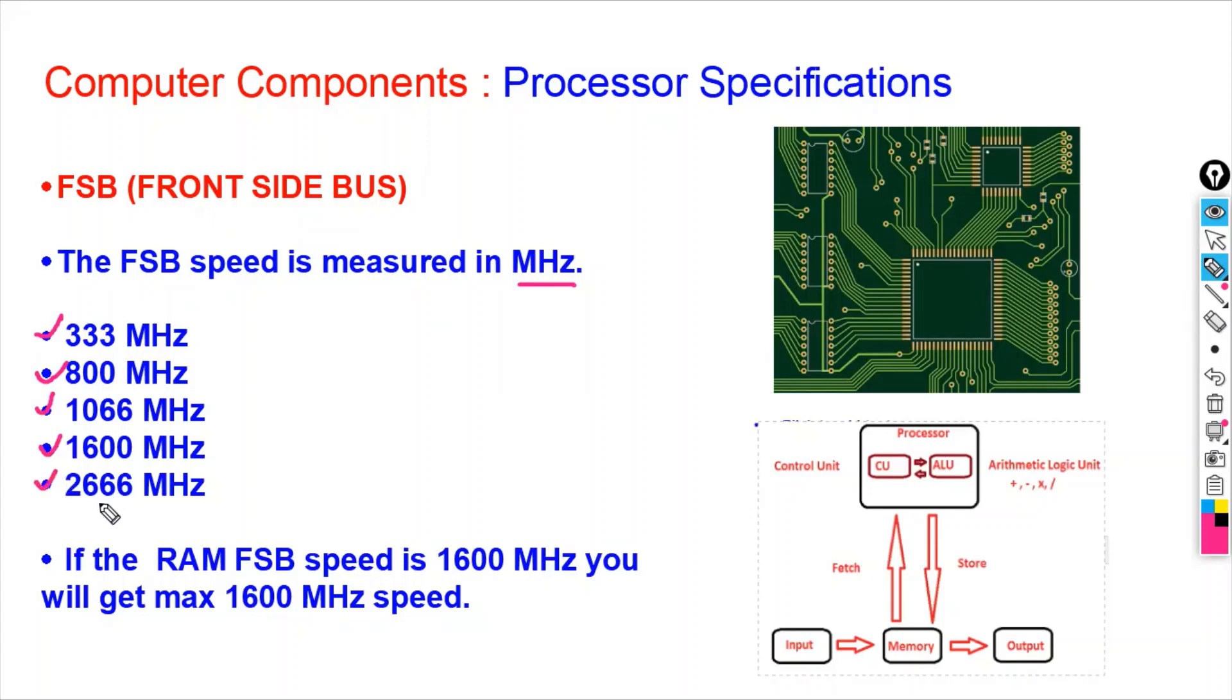2666 megahertz. So guys, let us say your processor supports 2666 megahertz, but your RAM FSB speed is 1600 megahertz. So you will get maximum 1600 megahertz of speed.